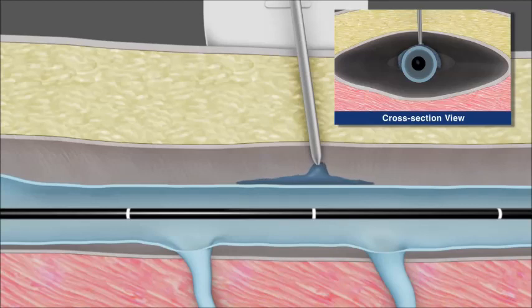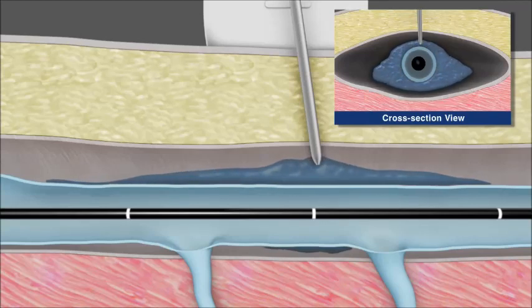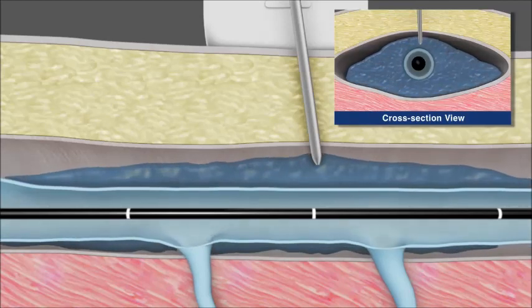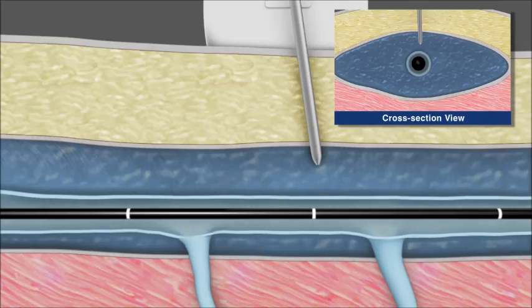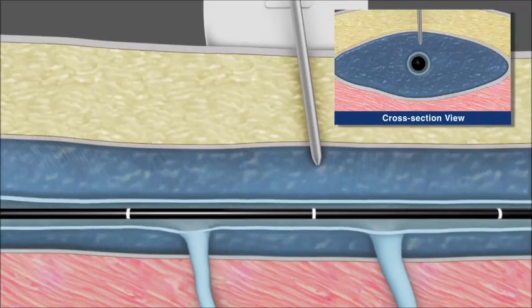Again under ultrasound guidance, perivenous tumescent anesthesia, or saline, is then delivered to the saphenous compartment surrounding the vein segment to be treated. This is done to enhance patient comfort, provide a heat sink to protect surrounding tissue, and to improve contact between the vein wall and the catheter during treatment.